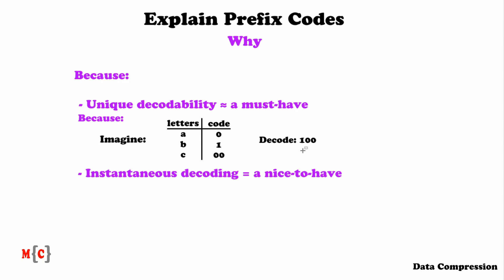If you want to decode this, you will see that the 1 will be decoded as a B, 0 can be decoded as an A, and the other 0 can be decoded as an A as well. However, you can also note that 1 can be decoded as a B, and the 00 can be decoded as a C together. So is it B, A, A or B, C?